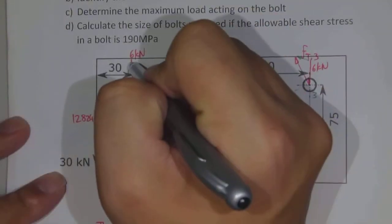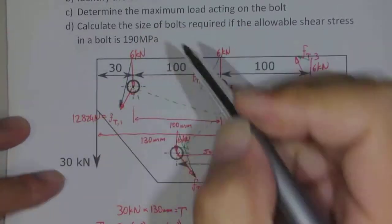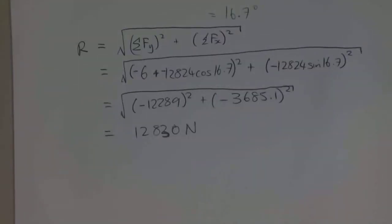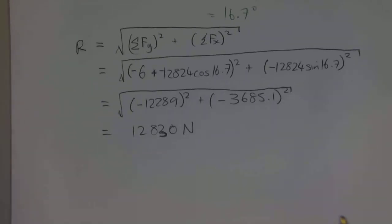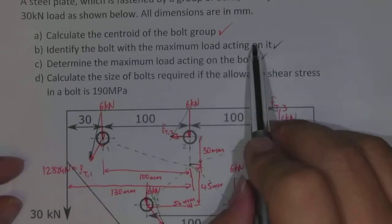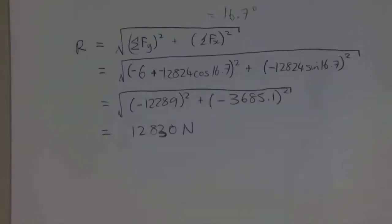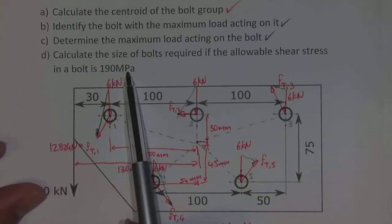In the last video we found that the resultant force acting on this bolt was equal to 12,830 Newtons. That means we've now solved part C on this question, and we've also done B previously. The next thing is to calculate the size of bolts required if the allowable shear stress in a bolt is 190 megapascals.